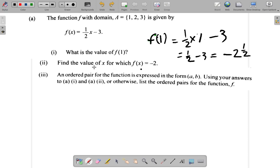After that, part 2 says find the value of x for which f of x is negative 2. So you're going to make f of x negative 2 now. So you have f of x is equal to half x minus 3. F of x is negative 2.